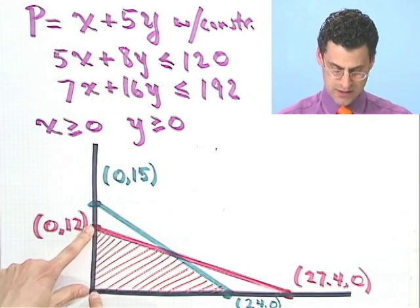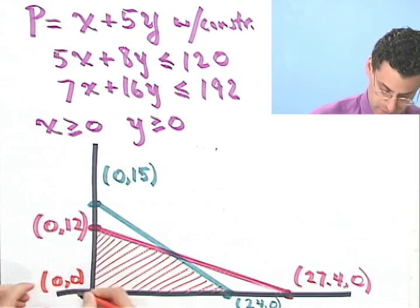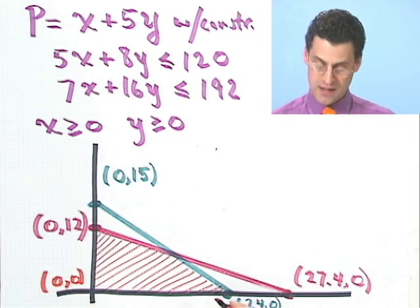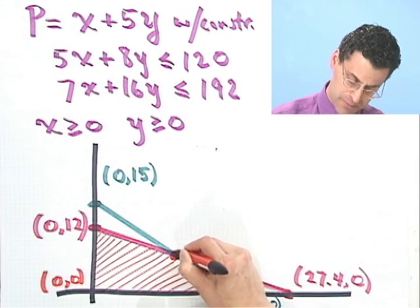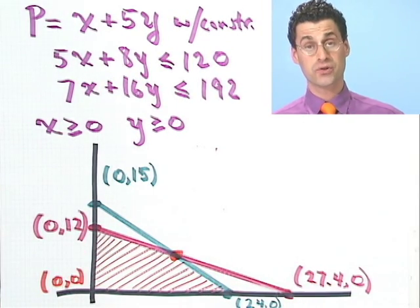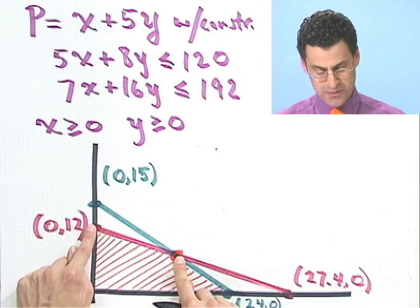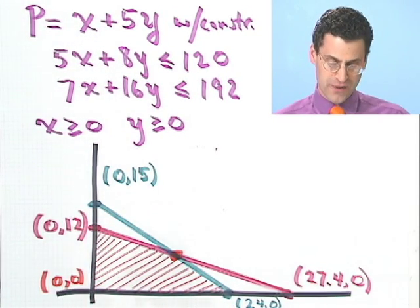And you can see that region actually is just a whole bunch of little line segments put together to make this shape. This line segment, and this point is 0, 0, the origin. Then this line segment, and then this line segment up to this point right there, the point of intersection of those two lines. And then this line segment up to this point.